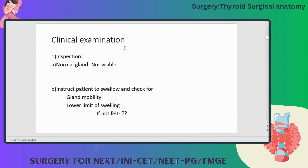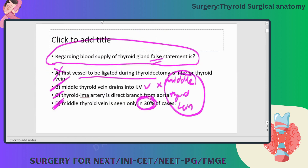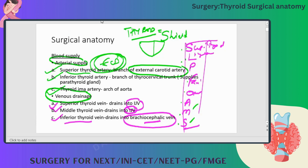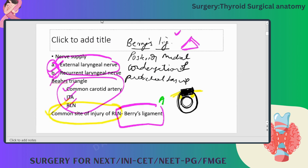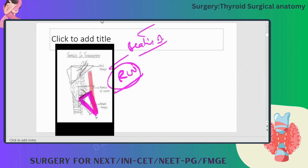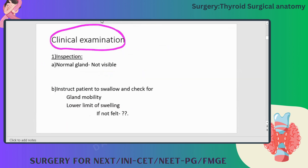Anatomy recap: arterial supply from external carotid — superior thyroid artery; inferior thyroid from thyrocervical trunk; thyroid ima is a direct branch of the aorta — that is very important and may be asked even in anatomy exams. Middle thyroid vein is the first vein to be ligated in thyroidectomy, but it is present only in 30% of cases. If you operate 100 cases you will identify the vein in only 30.